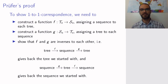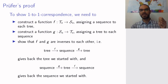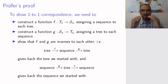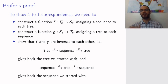If we start with a tree, apply f to get a sequence, and apply g to get back a tree, we should get the same tree we started with. Conversely, starting with a sequence, applying g to get a tree, and then f to get a sequence, we should get our original sequence back. Then f and g are bijections between the two sets, meaning T_n and S_n are in one-to-one correspondence and therefore have the same number of elements, which is n to the power n minus 2.